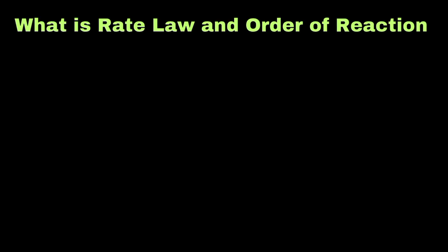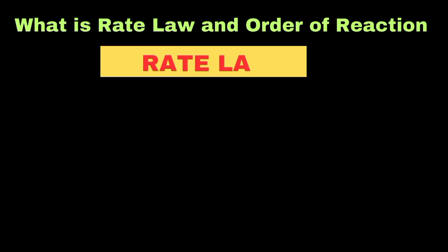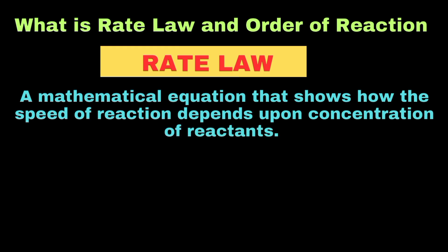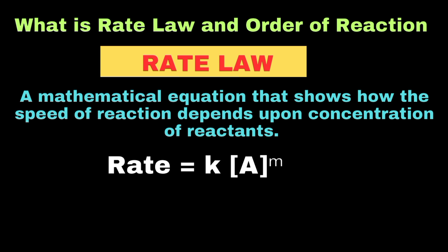The rate law is a mathematical equation that shows how the speed of a chemical reaction depends on the concentration of the reactants. It is expressed as: rate = k[A]^m[B]^n, where A and B represent the molar concentrations of reactants, k is the rate constant, and m and n refer to the reaction order, which tells us how much each reactant affects the rate.